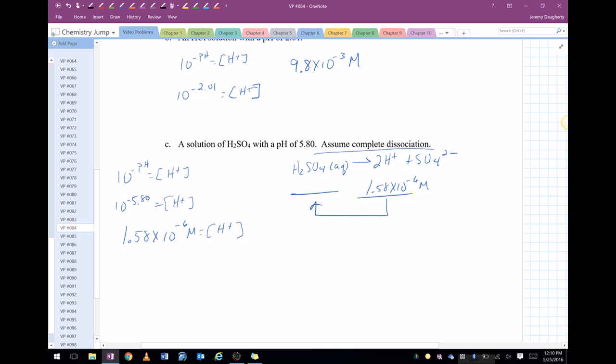So let's take that value, divide it by 2, and I get 7.9 times 10 to the negative 7th. That's 2 sig figs. That's the concentration of H2SO4. Great.